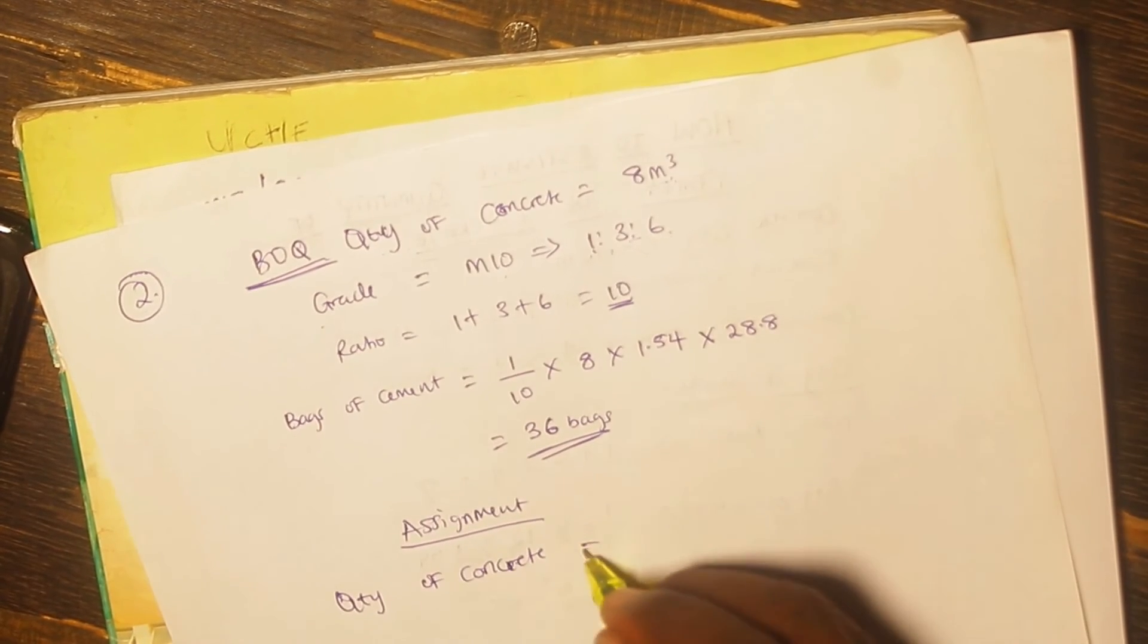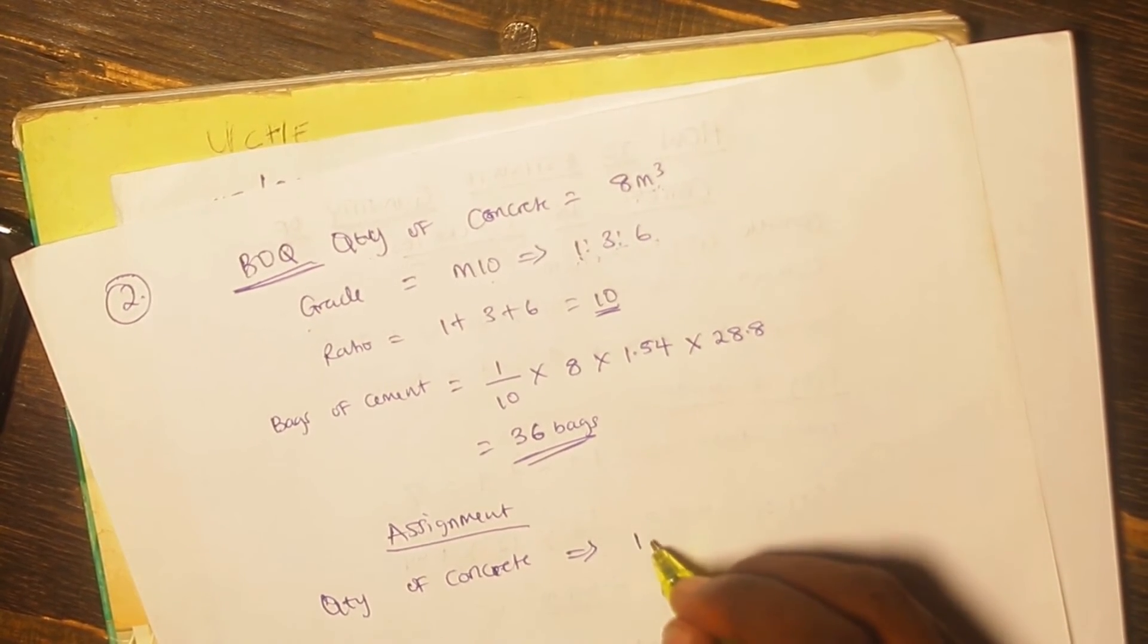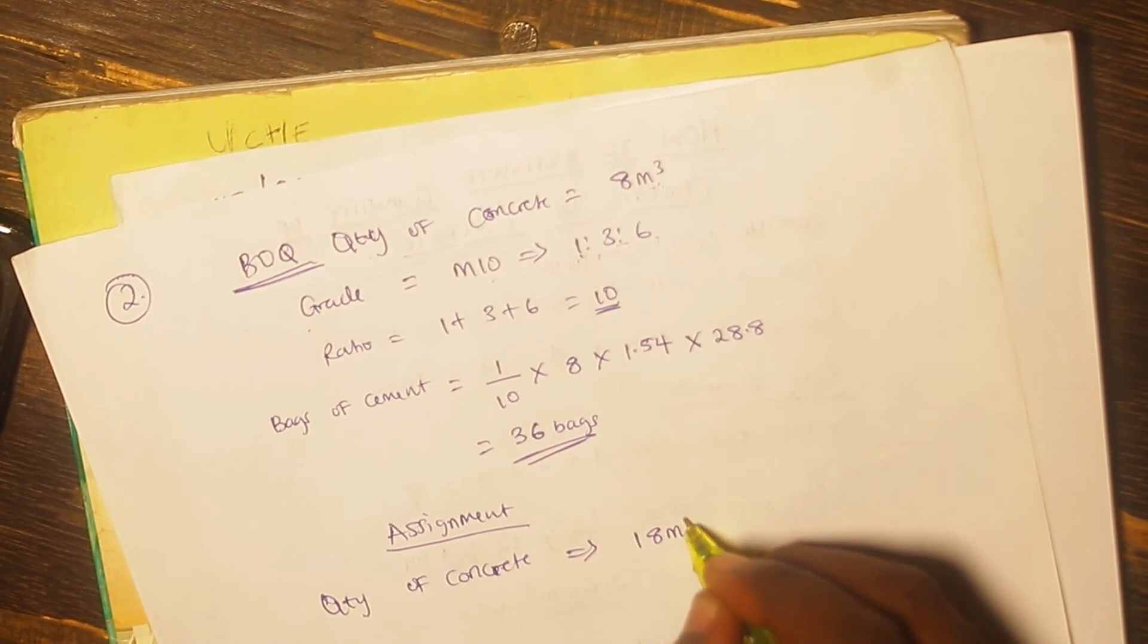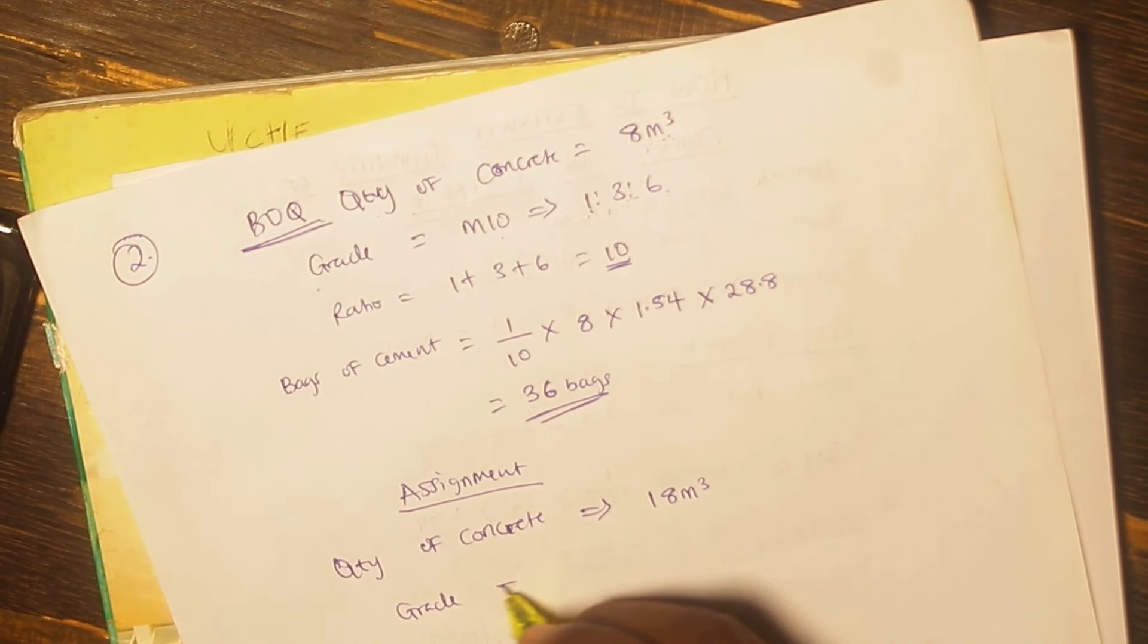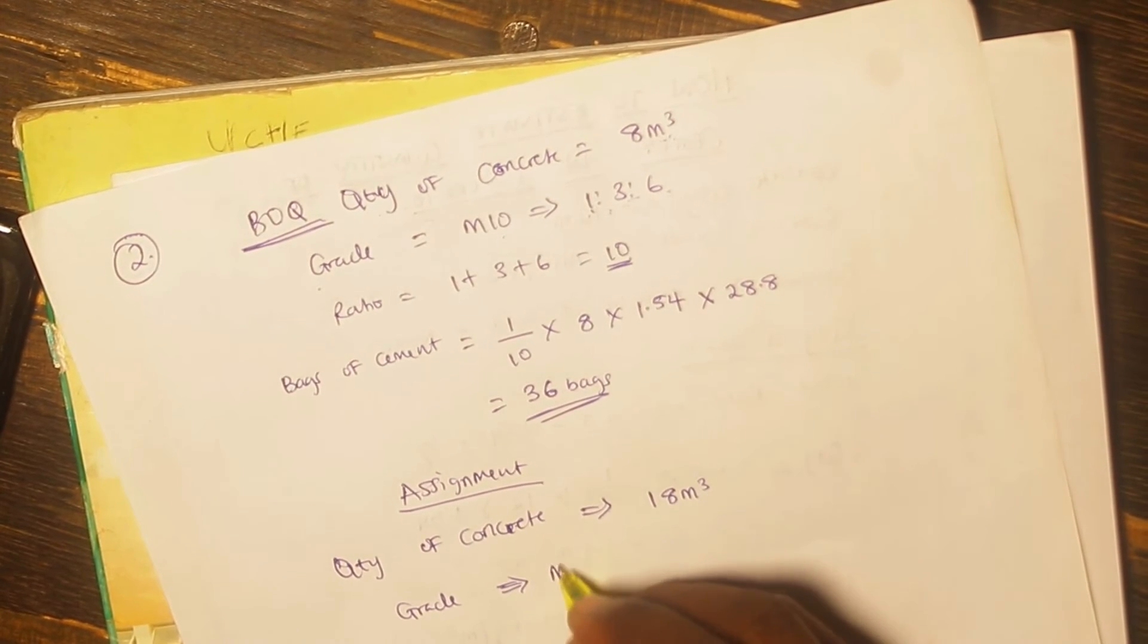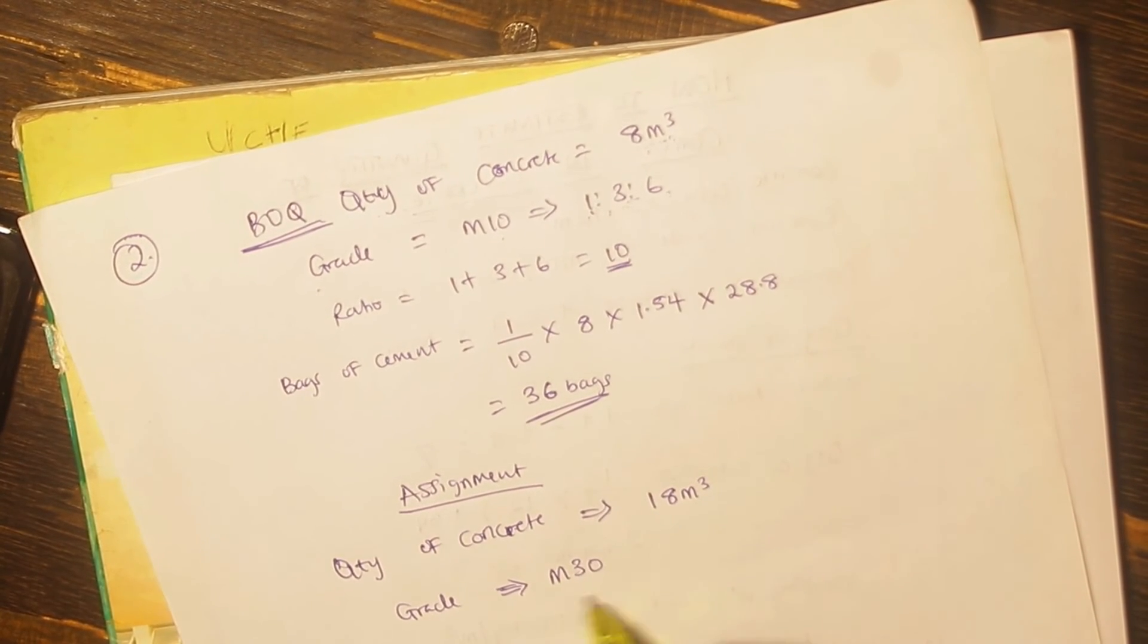So the quantity of concrete in the bill of quantity this time around is, let's say, 18 cubic meters, and then the grade that I want you to use is M30.